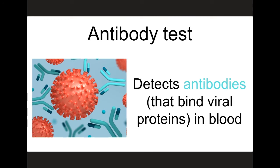That brings us to the second major category of tests — the tests that detect an immune response to SARS-CoV-2, which indicates a history of infection. In this case, blood needs to be collected either via a venous blood draw or a finger prick. This test is detecting antibodies that recognize and bind to viral proteins. These antibodies are products of our adaptive immune response and therefore an indication of past infection with SARS-CoV-2. However, it takes some time for this adaptive immune response to be generated, and therefore these tests are unlikely to be able to detect active virus infections. Instead, these tests are primarily used to inform public health organizations about the percent of the population that has already been infected, and therefore may be immune to reinfection.